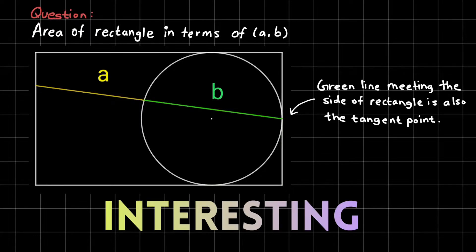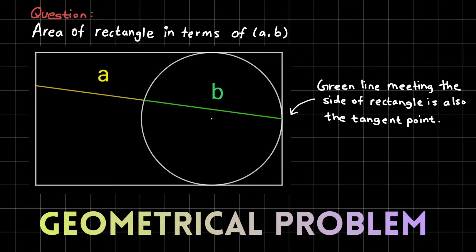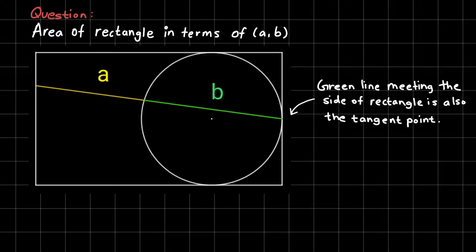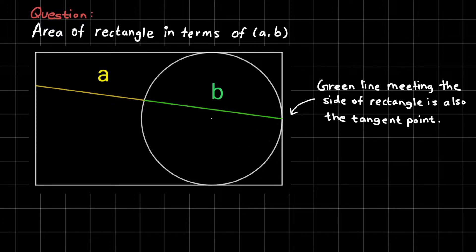Today we have an interesting geometrical problem. We have a rectangle, and inside this rectangle we have a circle that is tangent to 3 sides of the rectangle, as shown in the diagram. We draw a straight line segment inside the figure so that one end lies on the right side of the rectangle at the exact point where the circle is tangent to that side. So the position of one endpoint is fixed.